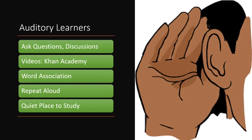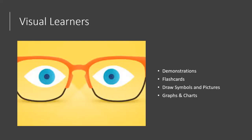For visual learners, you learn best by demonstrations and flashcards — flashcards are awesome for you. Draw symbols and pictures while the teacher is talking; you probably like to doodle, so draw the main idea. Graphs, charts, and diagrams are super helpful because anytime you can see something, it helps you learn.